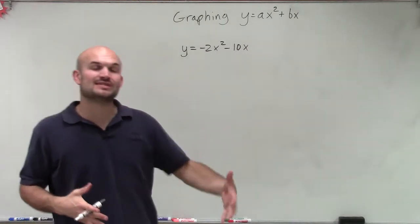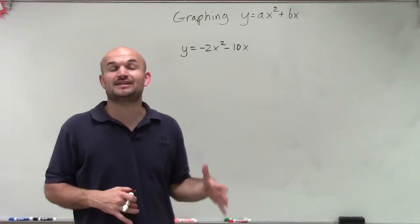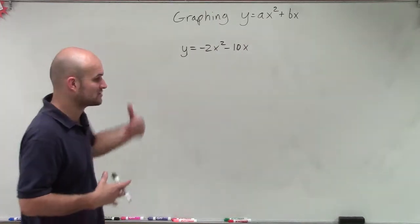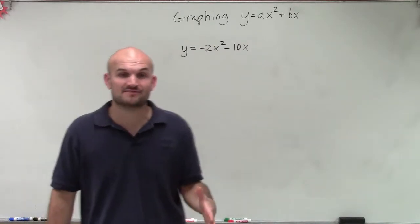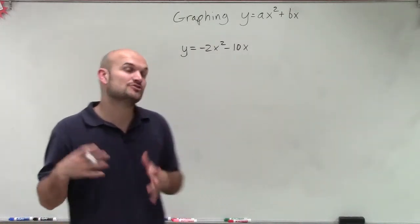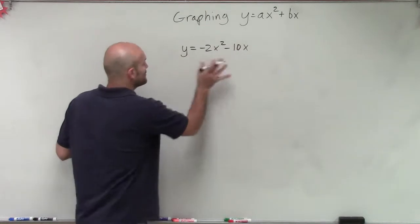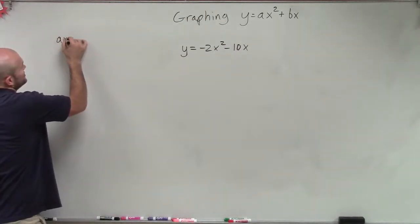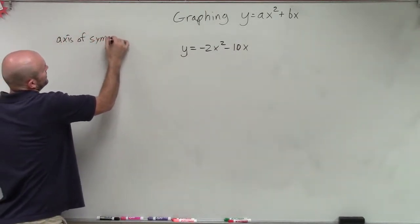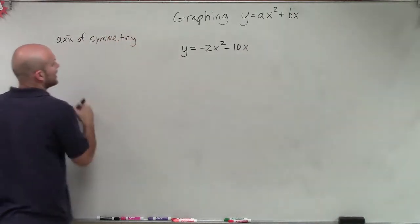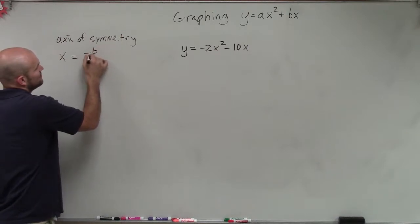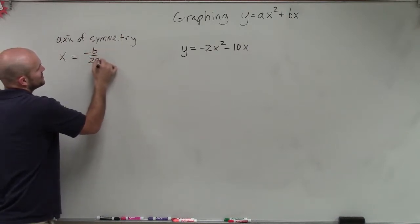Remember, when graphing by using a table, the most important thing we need to make sure we do is find our axis of symmetry. Because when we're choosing a set of points to graph this from, we have to make sure we choose points to the left and to the right. So the first thing I need to do is find the axis of symmetry, which is a vertical line: x equals the opposite of b divided by 2 times a.